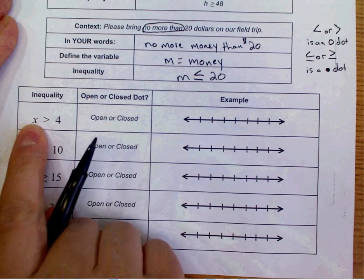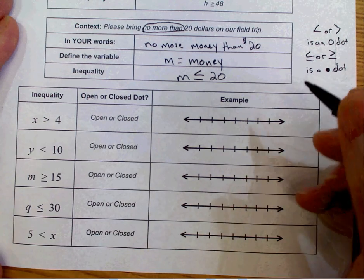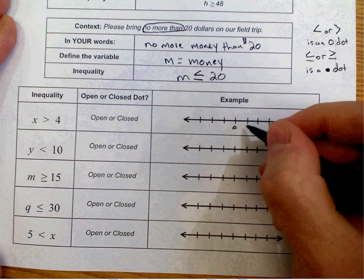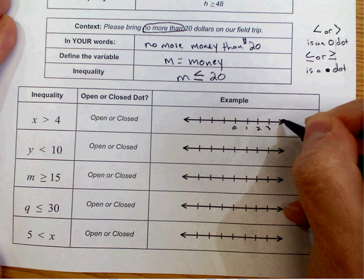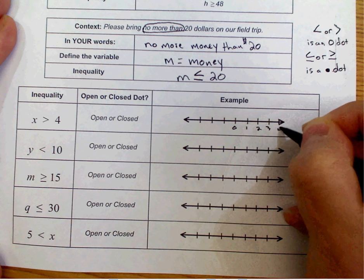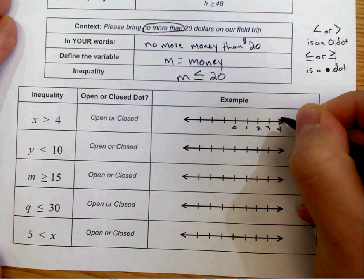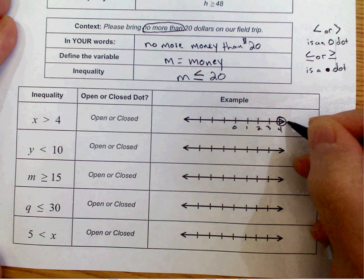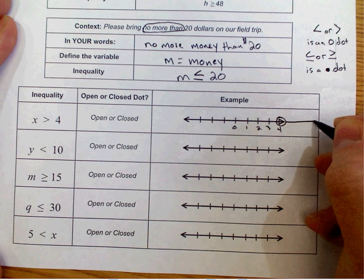So if we look at X is greater than 4, I have an open circle around 4, and if it's greater than, my arrow is going to go to the right.